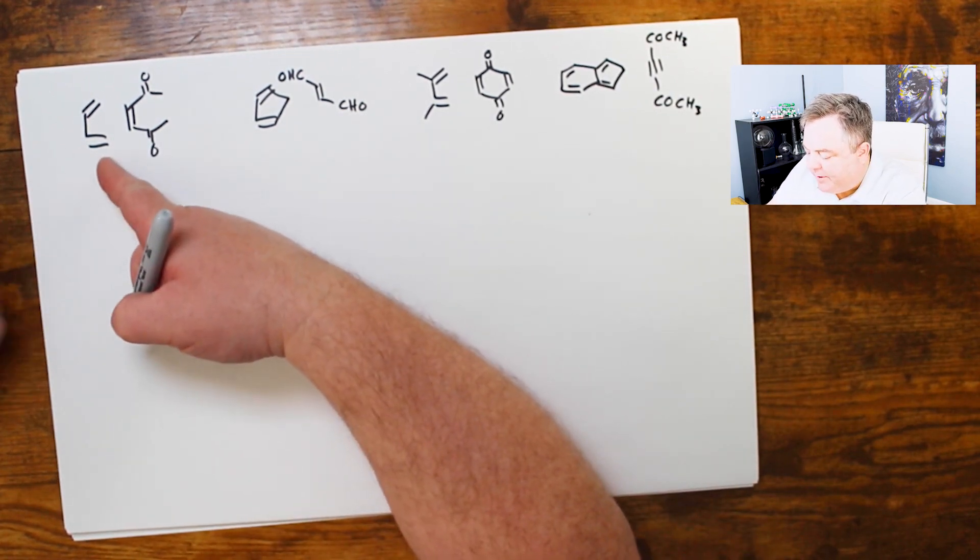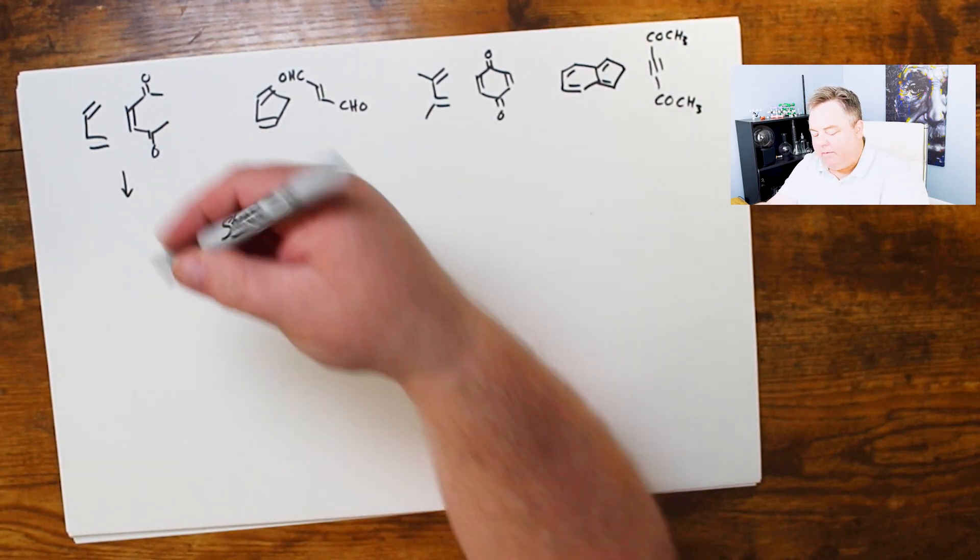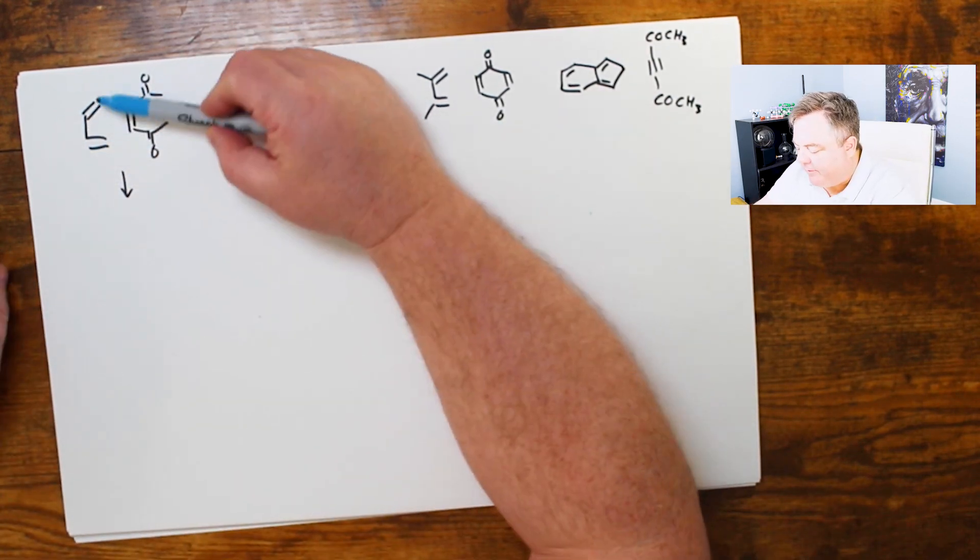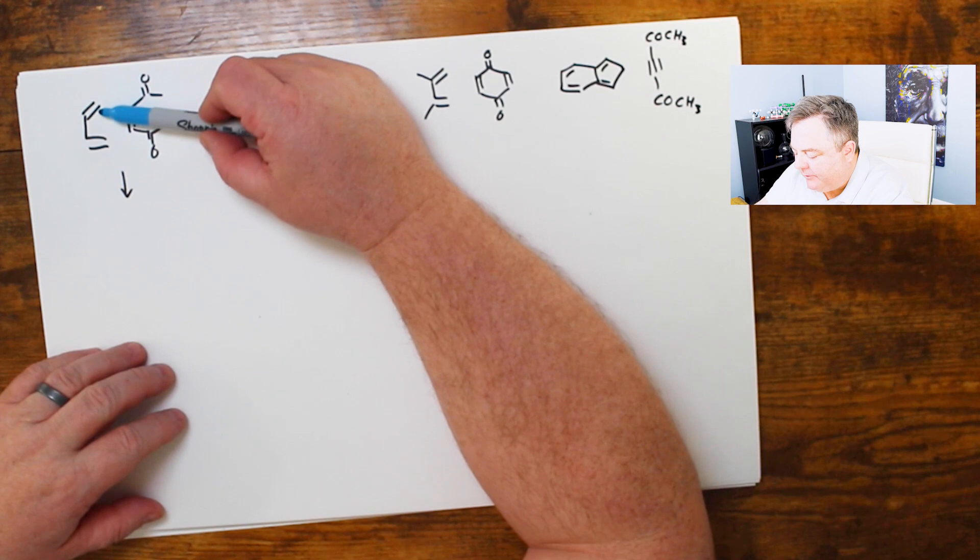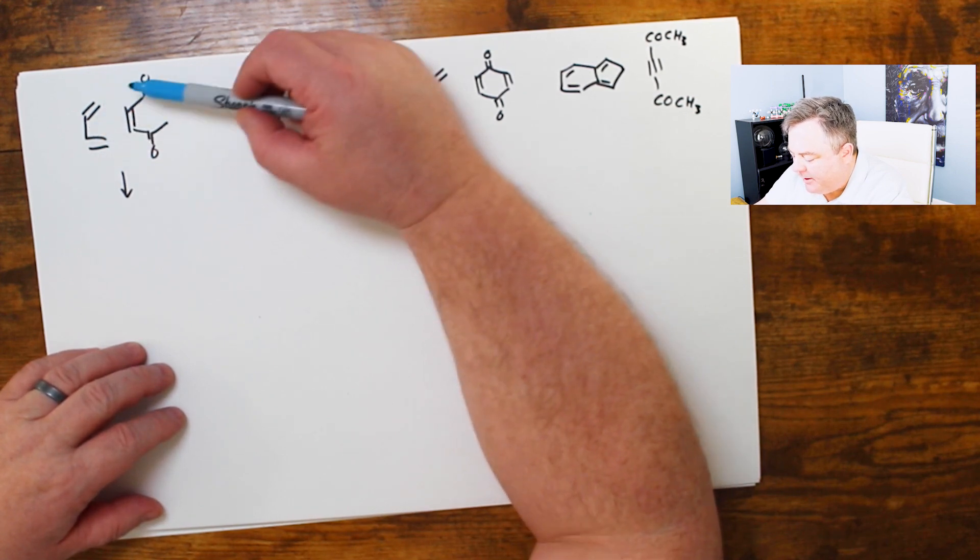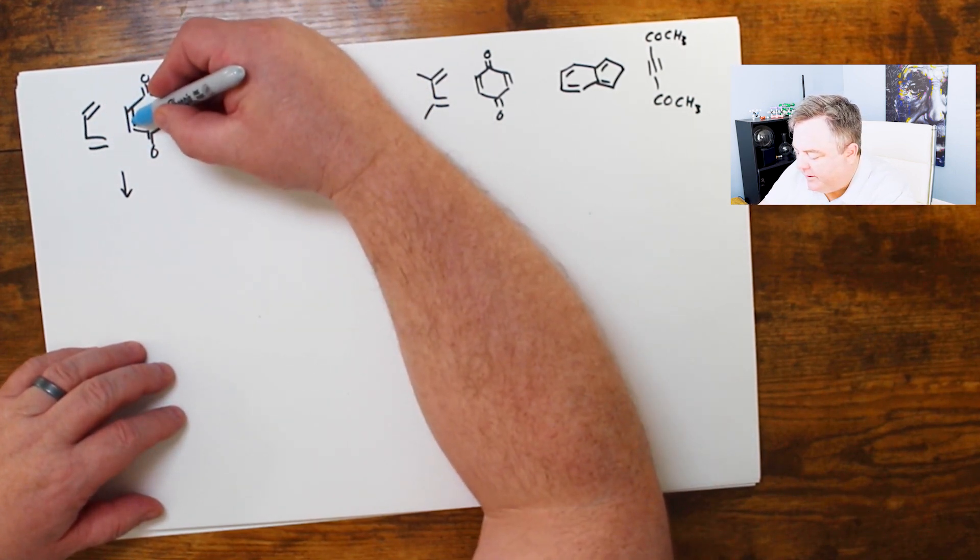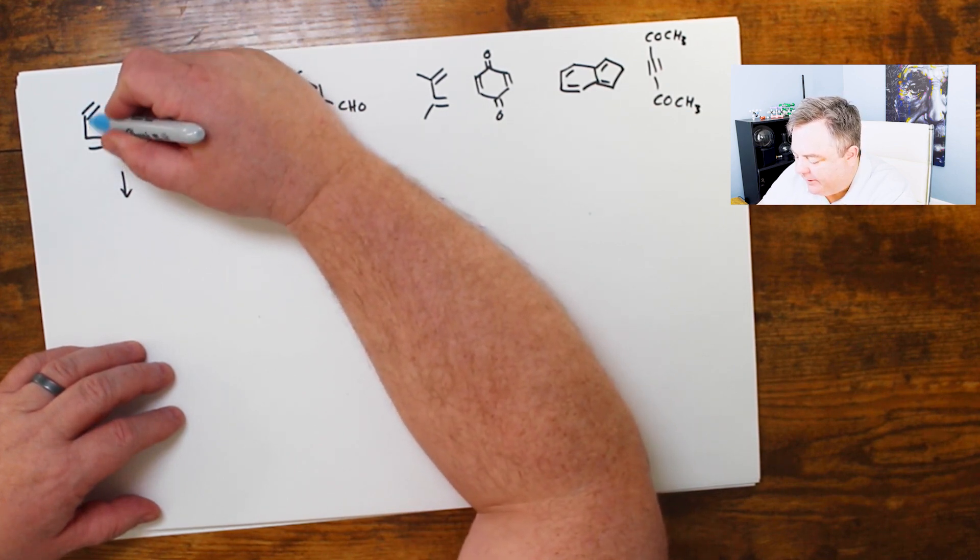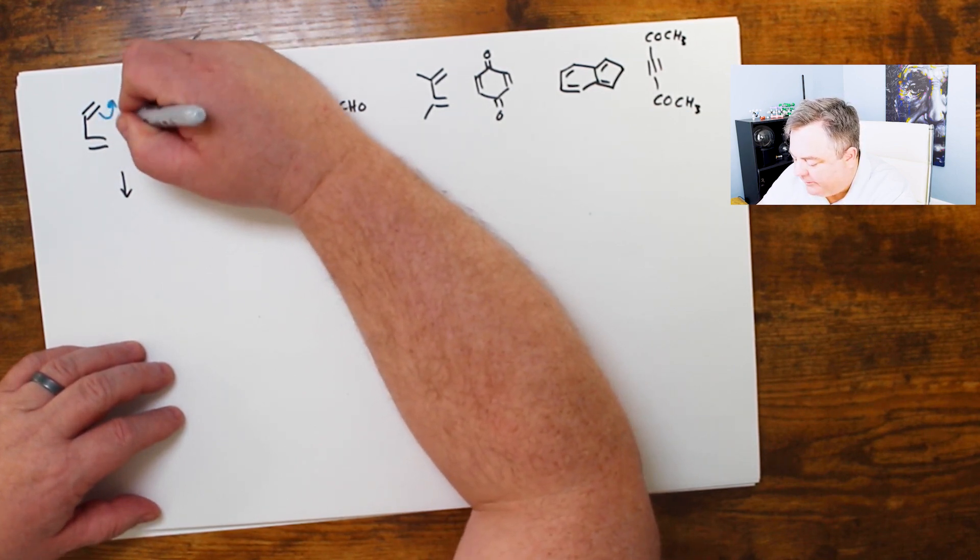In each of these problems we have a diene and a dienophile. This one is already in the S-cis conformation. The two double bonds are on the same side of this sigma bond. And here's my dienophile ready to zip up. So once I have this S-cis diene and dienophile, I can just zip, zip, zip.